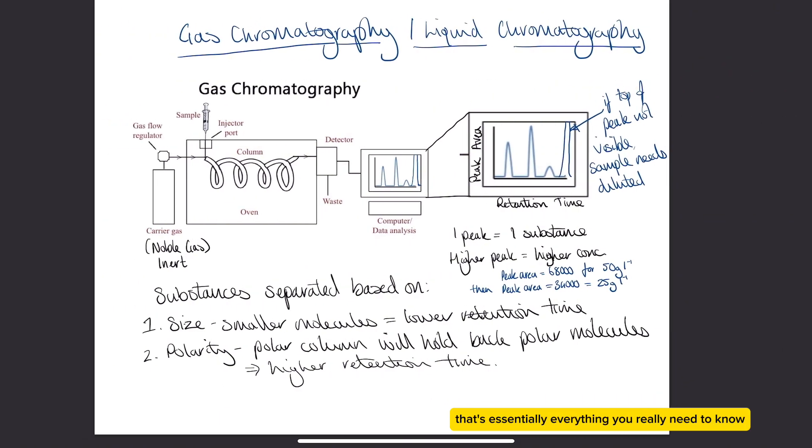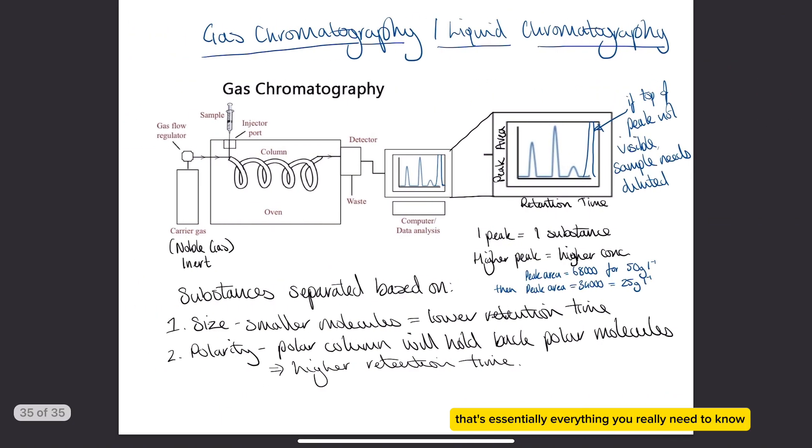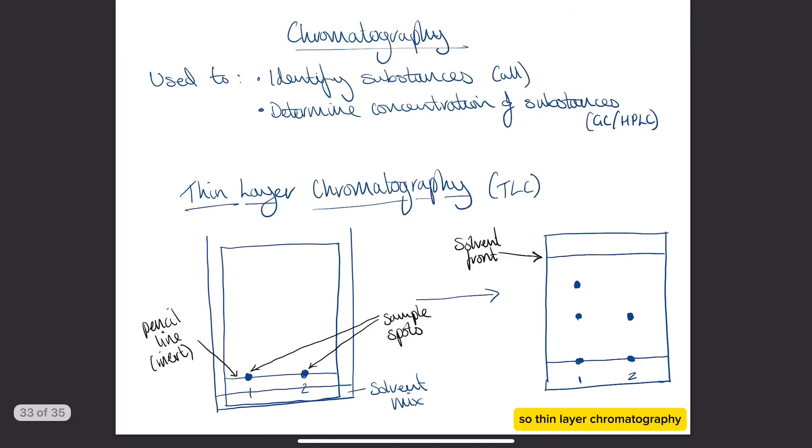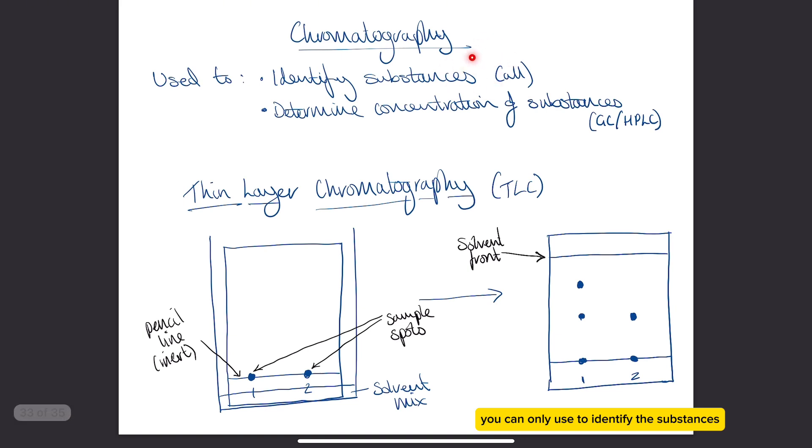Okay, so that's essentially everything you really need to know on the theory of all the types of chromatography you'll come across. Thin layer chromatography you can only use to identify the substances. Gas chromatography and liquid chromatography you can use to identify substances and determine the concentration of them as well. So hope that helped. If you find it useful please give it a like and don't forget to subscribe.